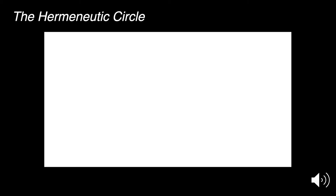The hermeneutic circle was an idea that really took root in the early 19th century in German biblical criticism. A guy named Friedrich Schleiermacher comes up with this method of interpreting the Bible and trying to understand how narratives operate. From there, it became an easy move to say this should apply to all forms of literature. Here's the basic premise: the symbols of a text define themselves through their use in the text. Or another way to say that: meaning builds through context. This is opposed to saying the words of a text are things we can find definitions for beyond the text. Rather, it's an acknowledgement that meaning comes from within the context the language is used.